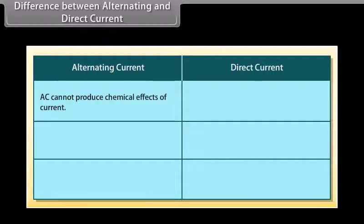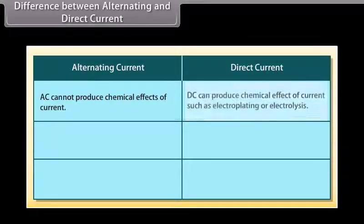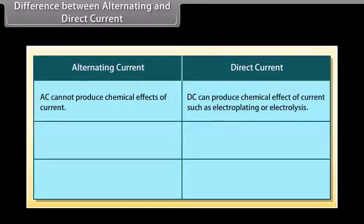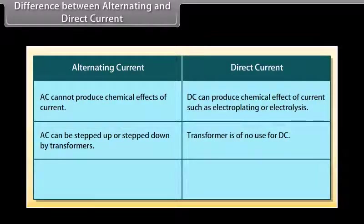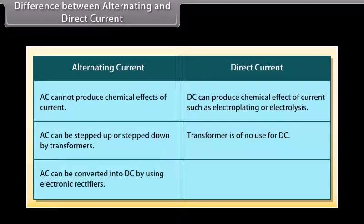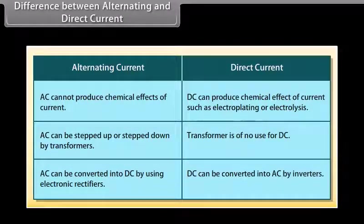AC cannot produce chemical effects of current, but DC can produce chemical effects of current such as electroplating or electrolysis. AC can be stepped up or stepped down by transformers, but a transformer is of no use for DC. AC can be converted into DC by using electronic rectifiers, whereas DC can be converted into AC by inverters.